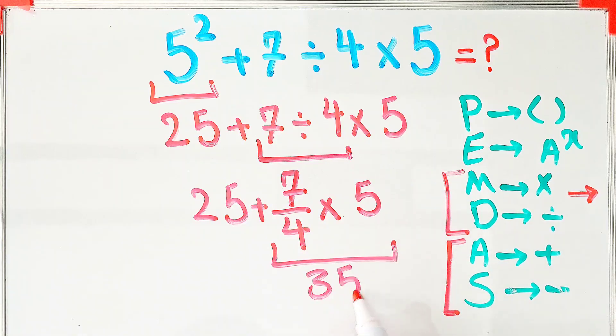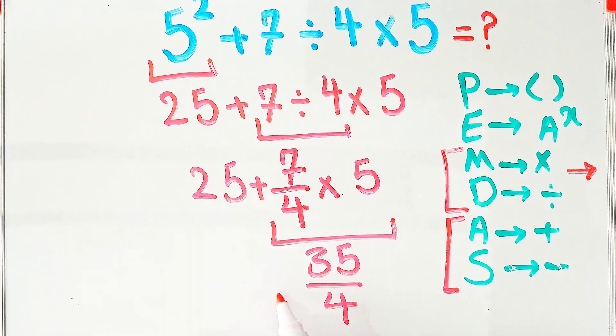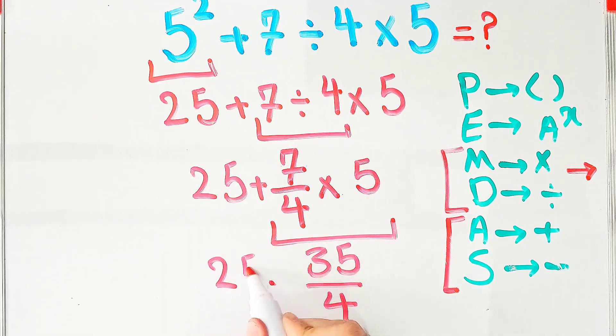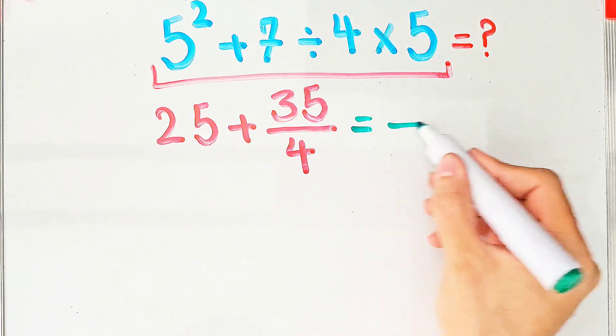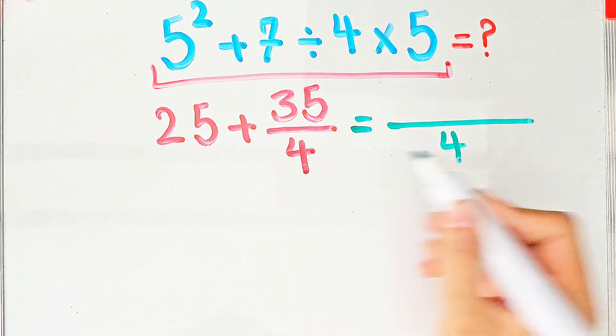The new question is 25 + 35/4. OK guys, let's simplify step by step. The common denominator of this question equals 4.